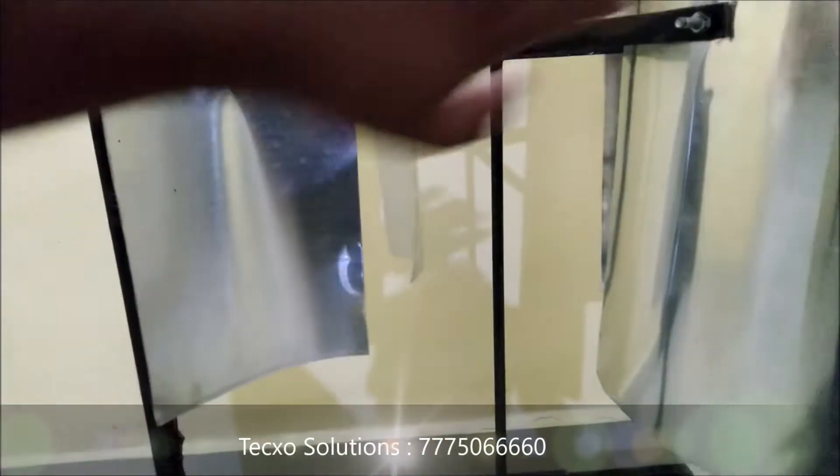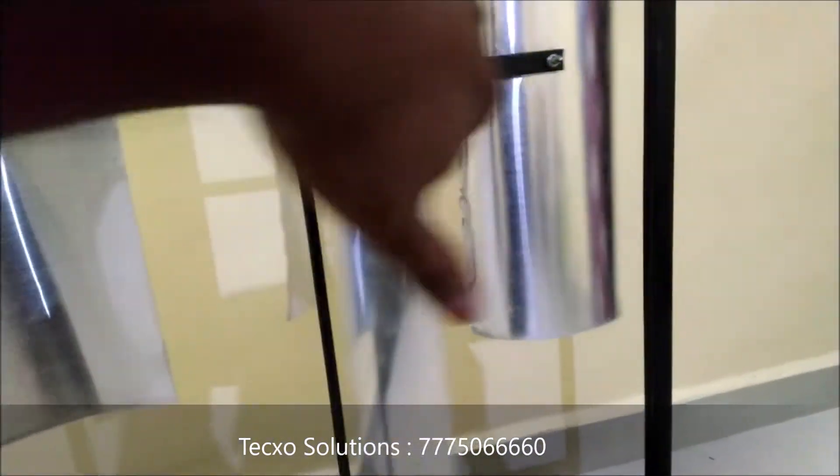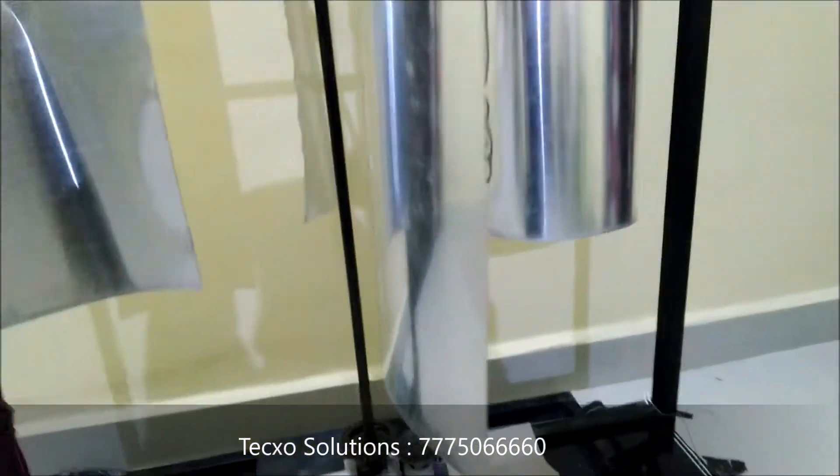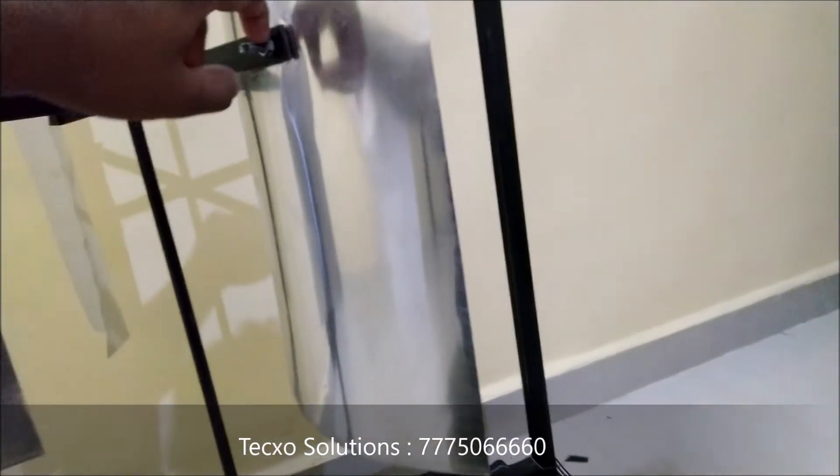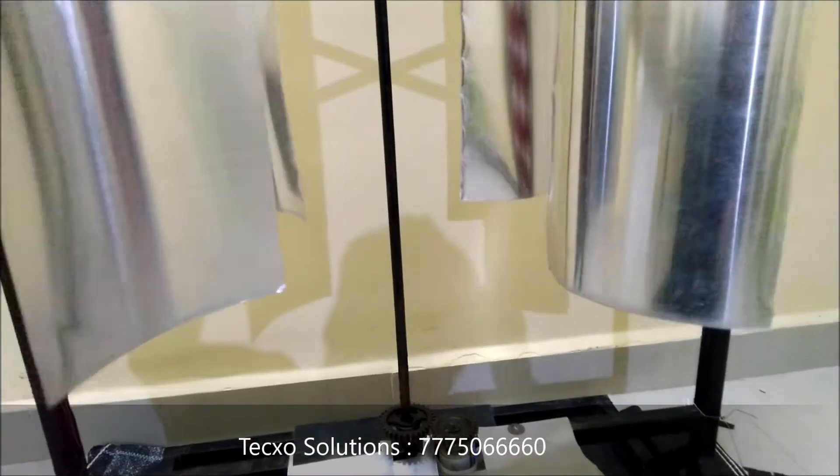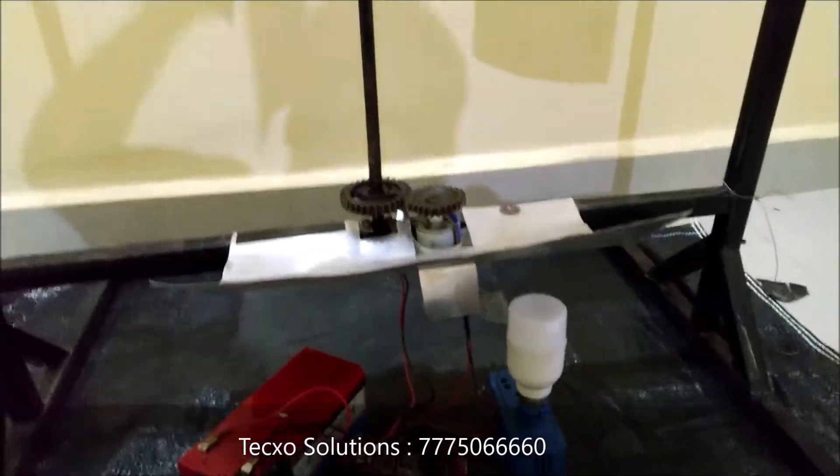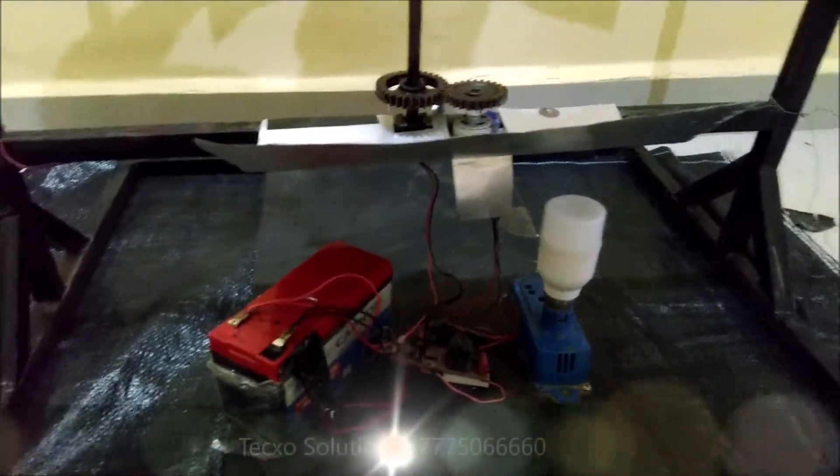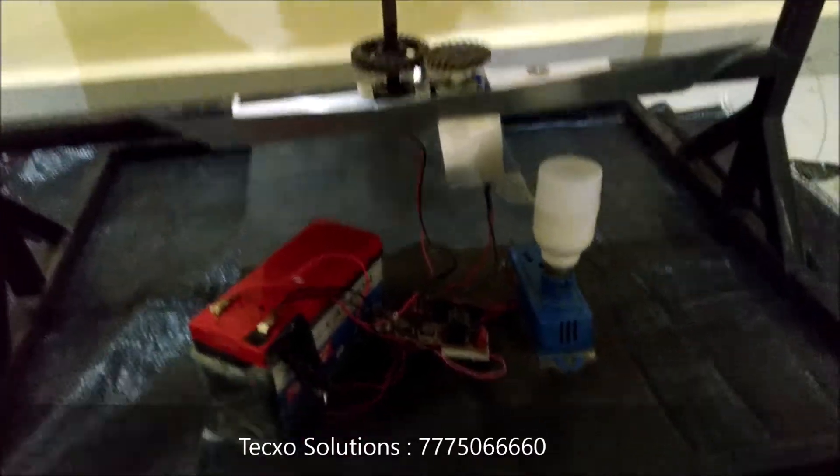When heavy air falls on this vertical axis turbine it starts rotating. So let's see how it works and how it rotates and how energy is produced. I'll push it with the help of my hand. As you see, the blue color LED starts blinking.